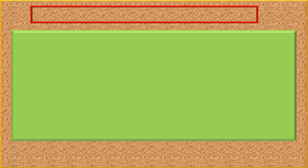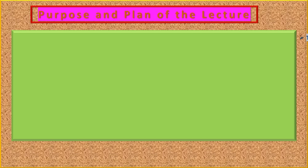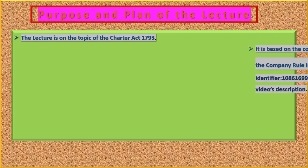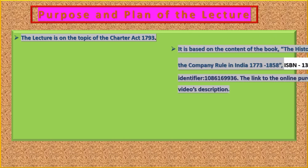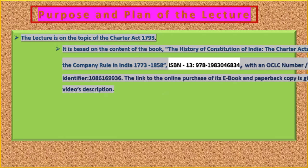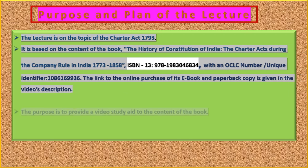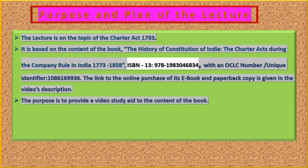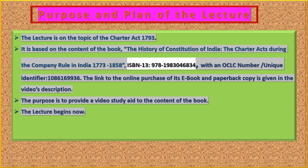The lecture is on the topic of the Charter Act 1793. It is based on the content of the book The History of Constitution of India: The Charter Acts During the Company Rule in India 1773–1858, ISBN-13: 978-1983046834, with OCLC number 1086169936. The link to the online purchase of its e-book and paperback copy is given in the video's description. The purpose is to provide a video study aid to the content of the book. The lecture begins now.